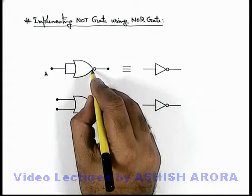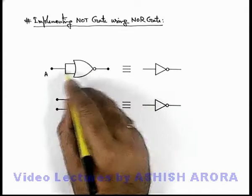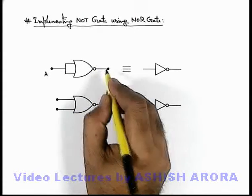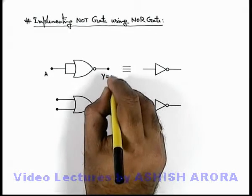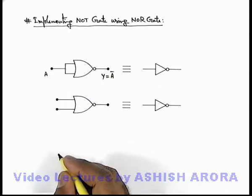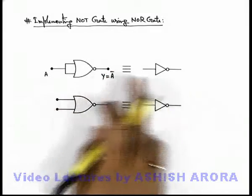we know that the output of this OR gate will be A, and then due to the bubble it will be inverted. So the output of this particular gate will be A prime or A bar. So this will be behaving like a NOT gate.